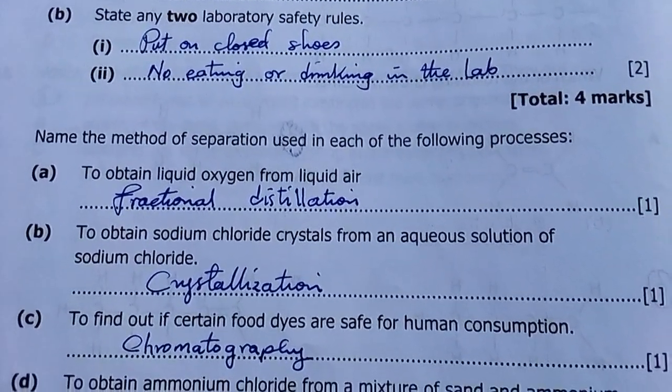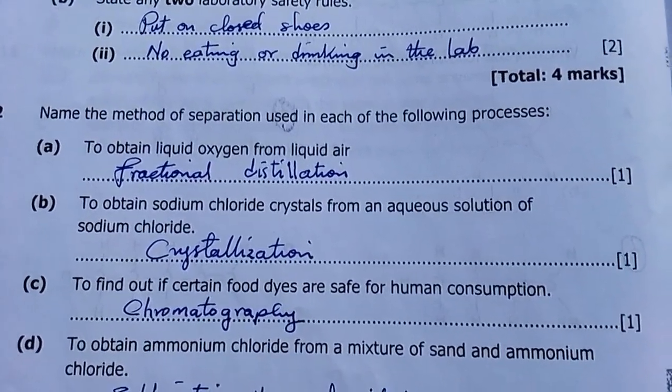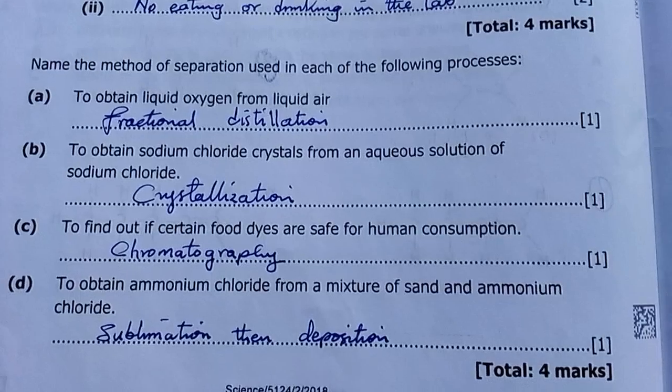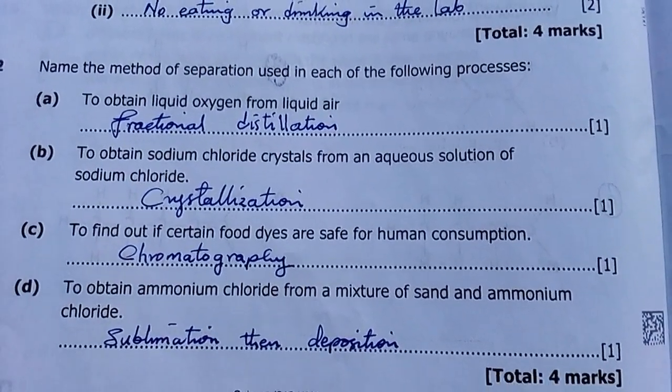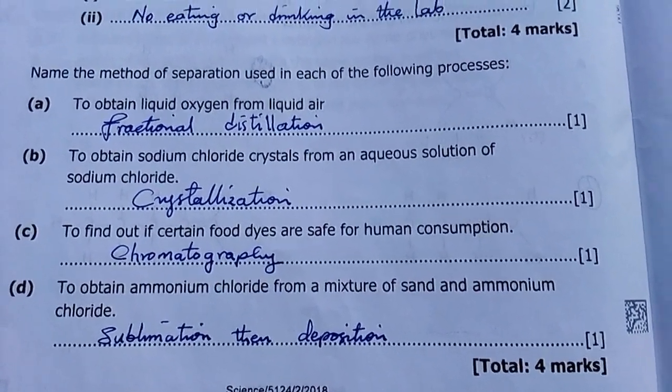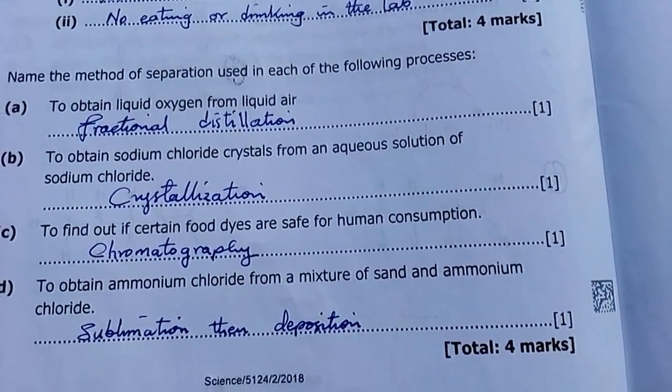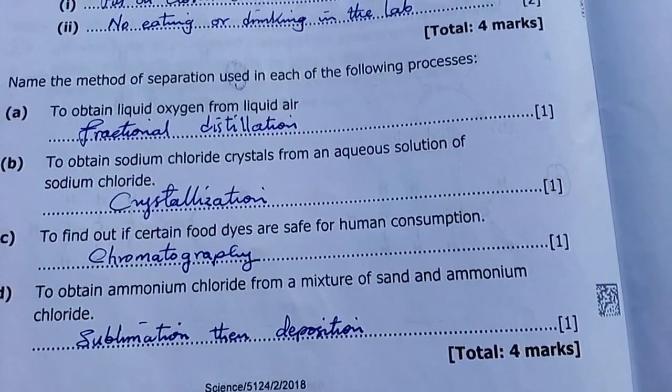To obtain liquid oxygen from liquid air, that's fractional distillation. To obtain sodium chloride crystals from aqueous sodium chloride, that's crystallization. To find out if certain food dyes are safe for human consumption, that's chromatography. To obtain ammonium chloride from a mixture of sand and ammonium chloride, that's sublimation, or afterwards you can call it deposition.